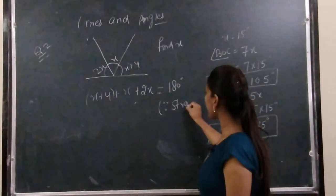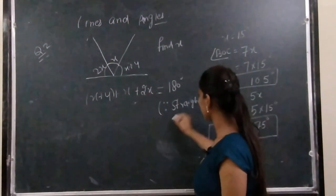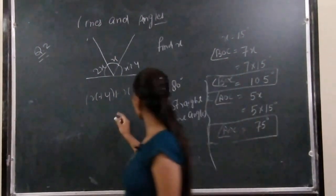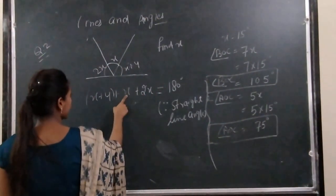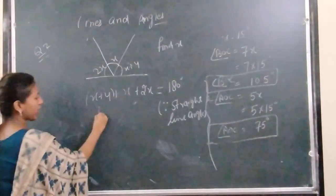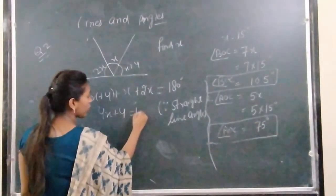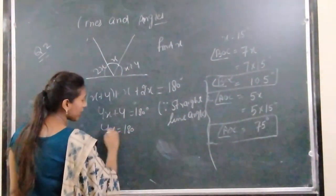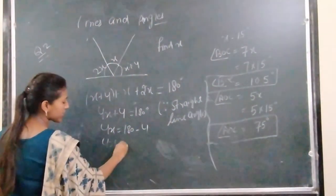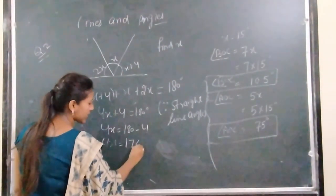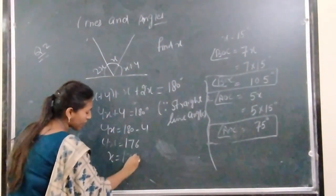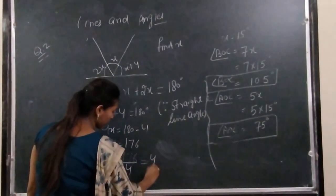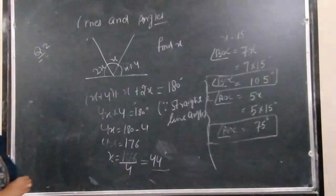So this becomes 2X plus X equals 3X; 3X plus X equals 4X; 4X plus 4 equals 180 degrees. Solving this linear equation: 4X equals 180 minus 4, so 4X equals 176, and X equals 176 divided by 4, which gives X equals 44.